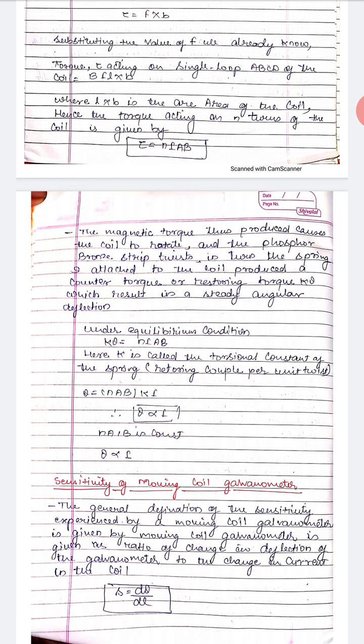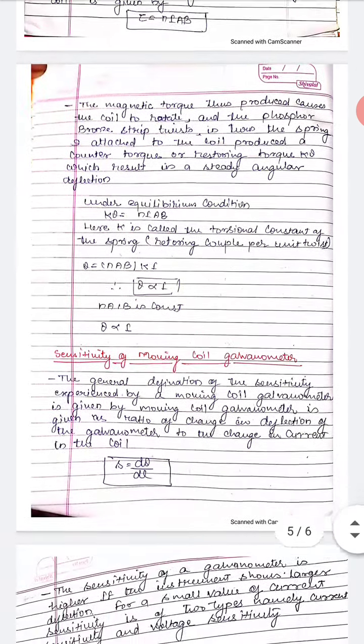Here, k is the torsional constant of the spring — the restoring couple per unit twist. Therefore, θ = NAB/k × i, which means θ is proportional to i. So the greater the angular deflection θ, the greater the current measured.